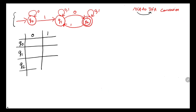Now we will mark the initial state and the final states. q0 is the initial state so we use an arrow; q2 is the final state so we put a star. These are the notations used in the transition table to denote whether a specific state is an initial state, just a state, or a final state.